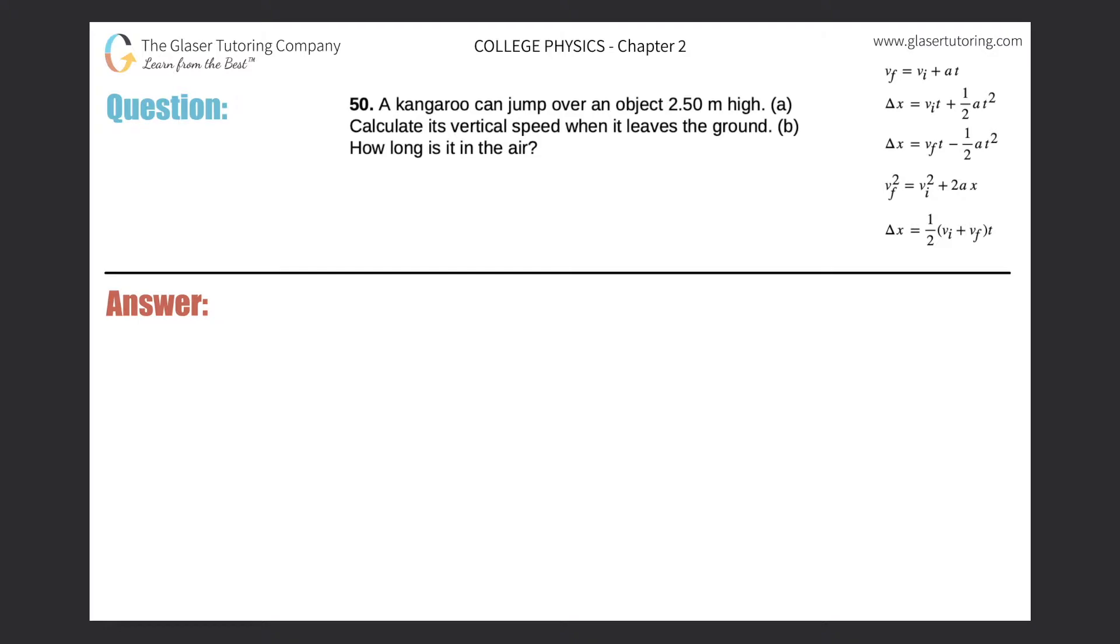Number 50. A kangaroo can jump over an object 2.5 meters high. Calculate its vertical speed when it leaves the ground.